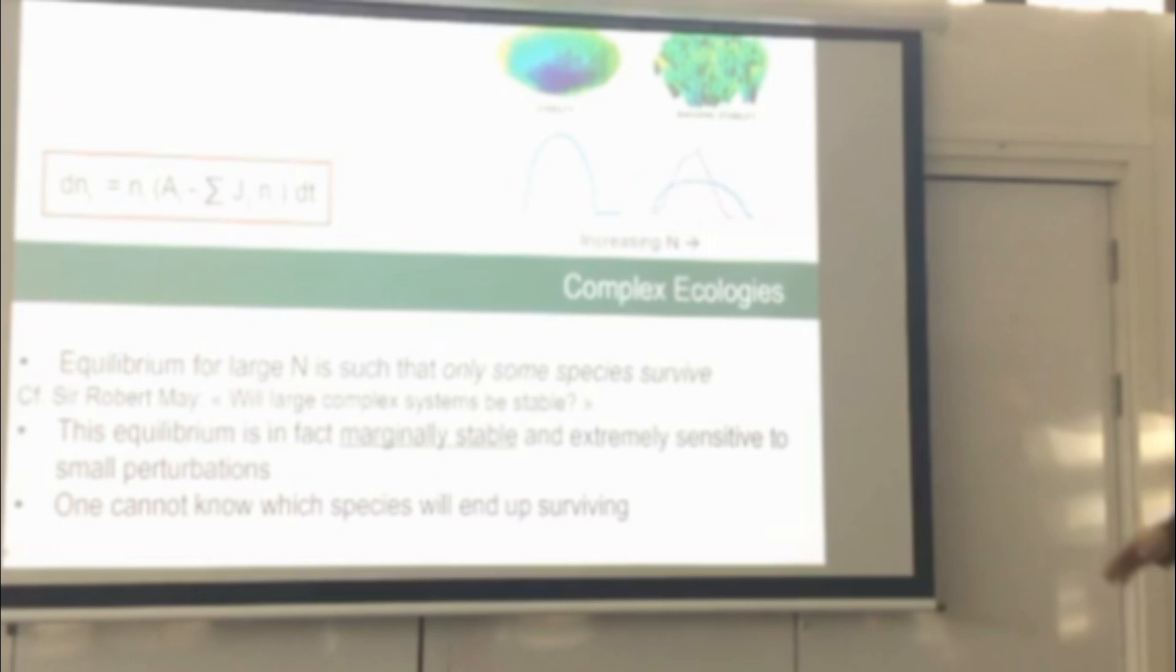So if you look into this complex but not that complicated model, you find a very interesting phenomenology. You find that equilibrium for large N is such that only some species can survive. Some species have to die. But this equilibrium is actually marginally stable. So it's at the border of instability. This is a little graph here showing the eigenvalues of the stability matrix. And you see that they touch zero. And underlying the landscape of this model is this extremely rough, complicated landscape where each little minima corresponds to a possible equilibrium.